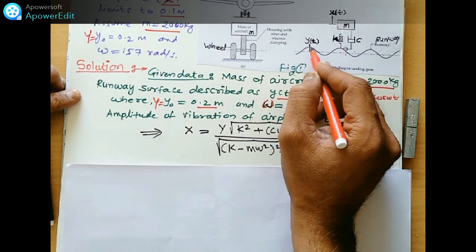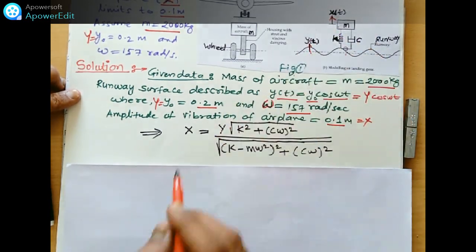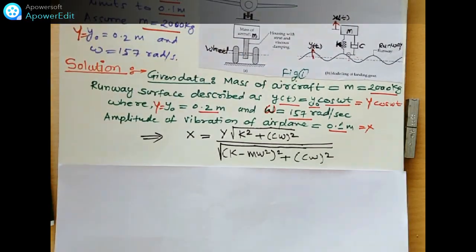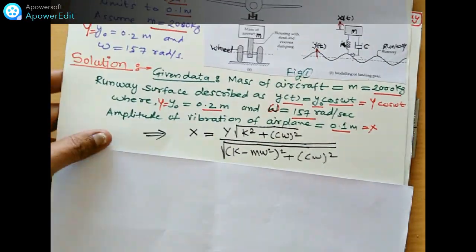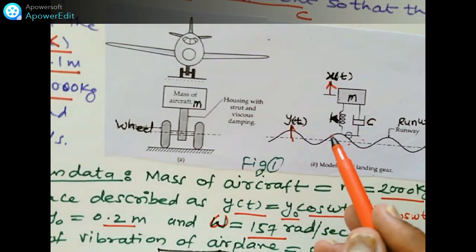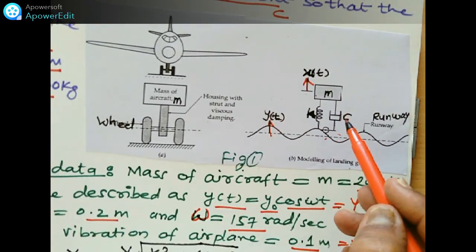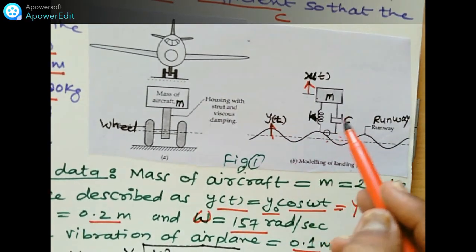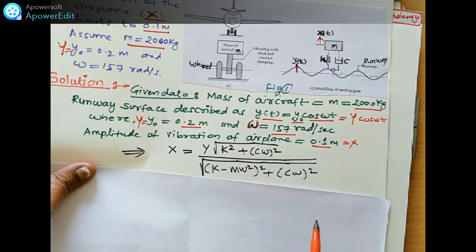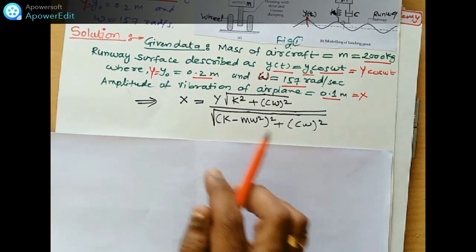Where the support and the surface both are exciting here. See here, here also excitation is there and here also excitation is there, both the side. I will zoom in the diagram so you can visualize. This is the runway, excitation here, excitation here. This is the k and this is the c that we have to find out. The runway having some surface excitation. So how to find out this value k and c by using this formula.